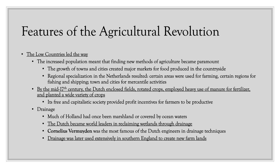By the mid-17th century, the Dutch enclosed fields, rotated crops, employed heavy use of manure as fertilizer, and planted a wide variety of crops. The reason the Dutch were so successful is because they had a free and capitalistic society — the government did not control what merchants and businessmen could do, which provided profit incentives for farmers to be more productive.